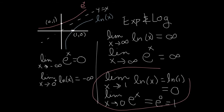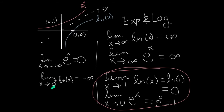The previous two limits were examples where the function is continuous — ln is continuous at x equals one, and e is continuous at x equals zero. But notice that none of the other limits involved continuous functions; you cannot just plug in the value. For example, the ln function has an asymptote as x approaches zero, so it is not valid to plug in x equals zero there. You can only substitute directly when the function is continuous at that point.